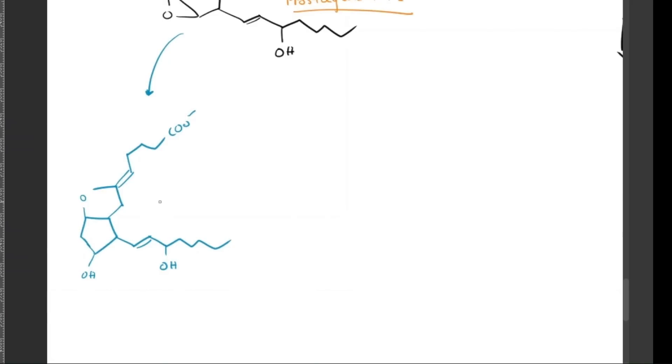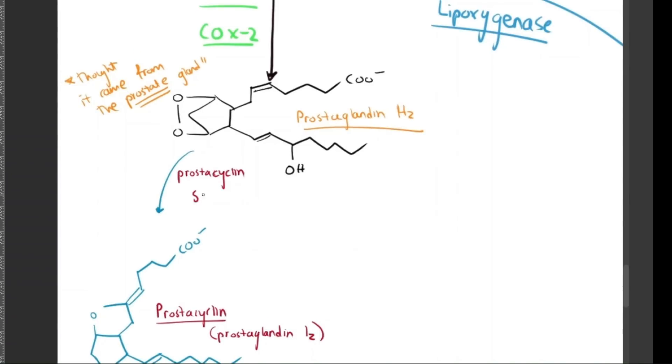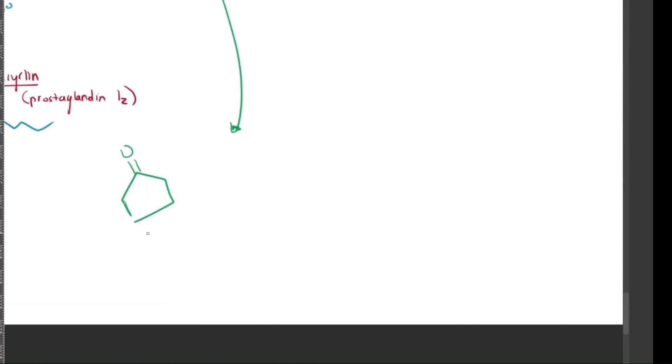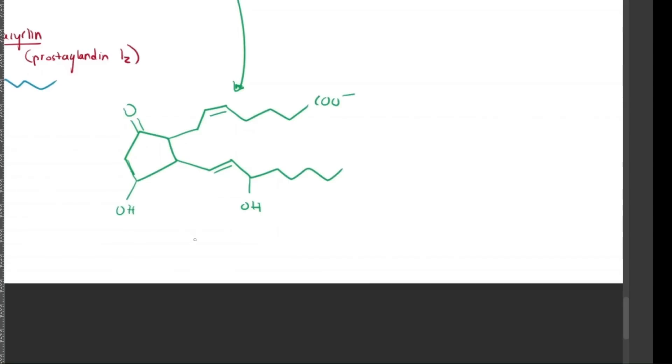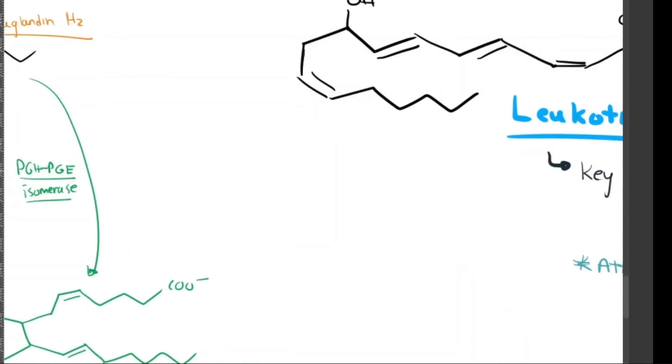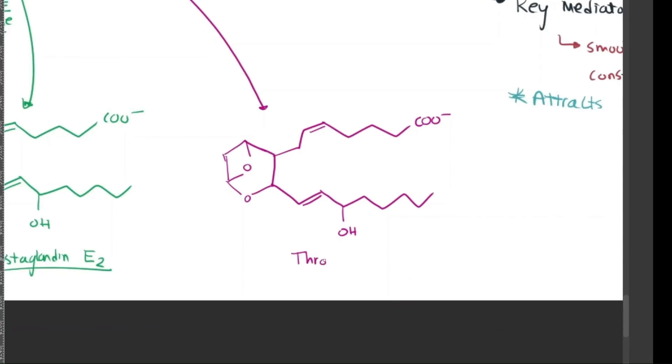Here, I am drawing what this prostaglandin H2 is able to branch off into. Via prostacyclin synthase, we can make prostacyclin or prostaglandin I2. PGH2 can also, via PGE isomerase, make prostaglandin E2, which is considered the multitasker. And I'm going to touch base on this even more in a little bit. And finally, they can also make thromboxane, or thromboxane A2 specifically for platelets, via thromboxane synthase, as we can see in this molecule right here. And I will also explain that a bit more.